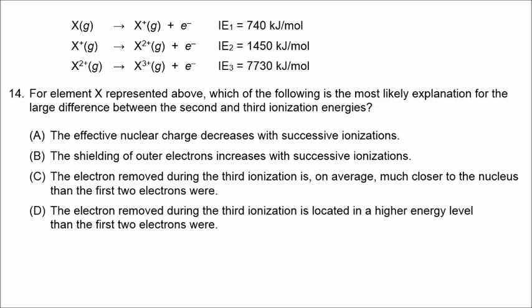Moving on to question 14: we have successive ionization energies for a particular element. The first electron requires 740 kilojoules per mole to remove, the second requires 1,450, but there's a very large increase at the third ionization event — over 7,000 kilojoules per mole. We're trying to figure out why there's such a large difference between the second and third ionization energies.